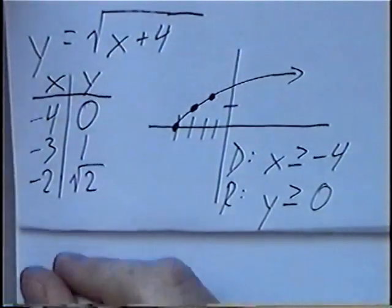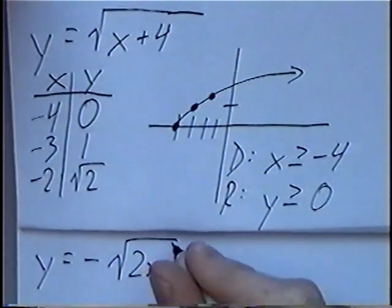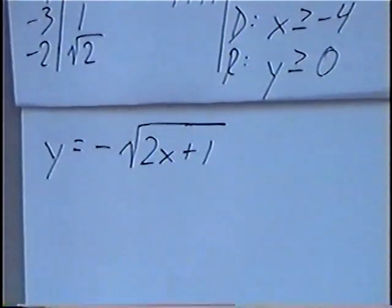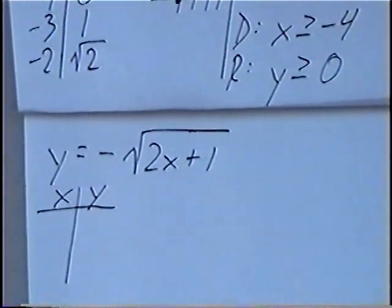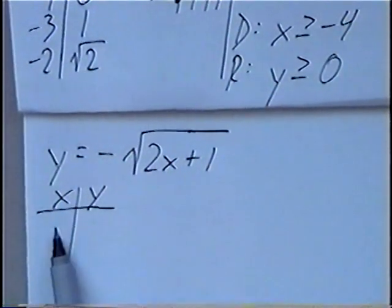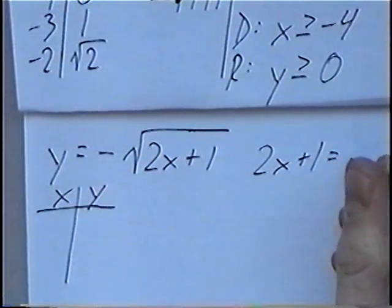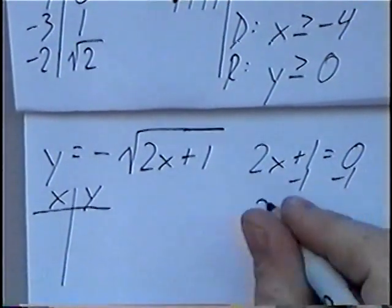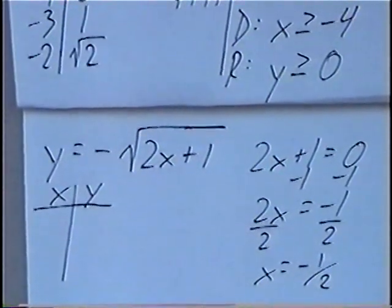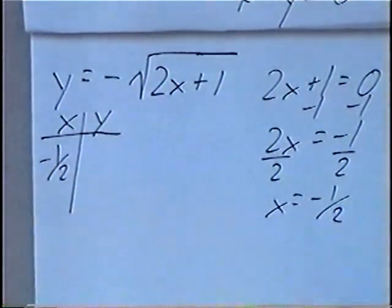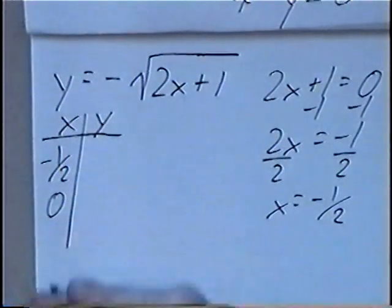The last function to graph for this section is y equals negative square root of 2x plus 1. Again we use a t-table. To determine which number to start at, we look at the function inside the square root, which is 2x plus 1, and find where 2x plus 1 equals zero. By subtracting 1 on both sides and dividing by 2, we get x equals negative one-half. So we start the t-table at negative one-half and pick a couple of values above that — zero and one.